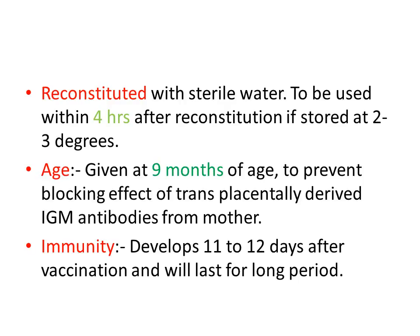The vaccine is given at nine months of age to prevent blocking by placentally derived maternal IgG antibodies. Giving it at nine months ensures that maternal antibodies have waned sufficiently to allow the vaccine to be effective.